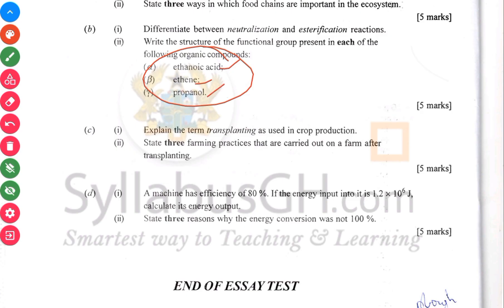Then C: explain the term 'transplanting' as used in crop production, and state three farming practices that are carried out on a farm after transplanting — what does a farmer do after taking the crop from the nursery onto the field.